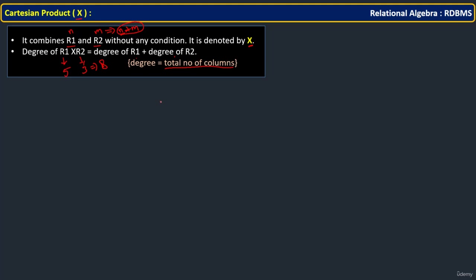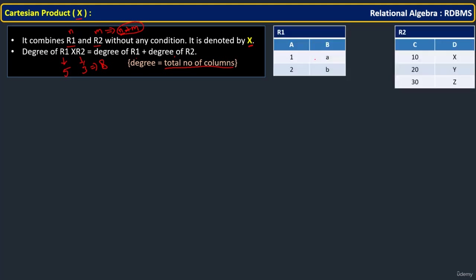Let us try to understand the Cartesian product with a simple example. Here we have relation R1 and relation R2, with attributes A, B and C, D. Now we perform R1 cross R2, a Cartesian product. The result first takes all attributes from R1 (the left operand), followed by all attributes from the second relation R2.